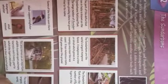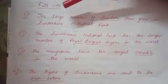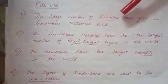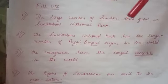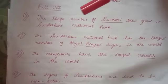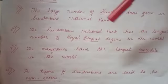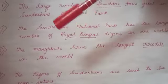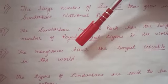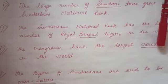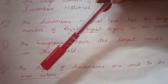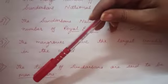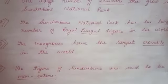Children, you can see there is no direct exercise over here, so I am giving you four fill-ups. You can write them in your copy. The large number of Sundari trees grow in Sundarbans National Park — underline Sundari. The Sundarbans National Park has the largest number of Royal Bengal Tigers in the world. The mangroves have the largest crocodile in the world — underline crocodile. The tigers of Sundarbans are said to be man-eaters — underline man-eaters.